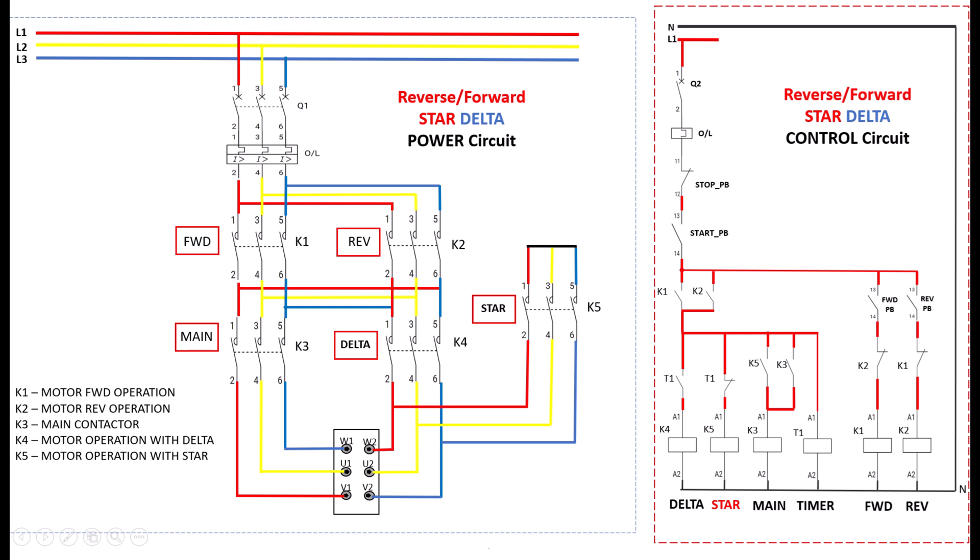The star delta starter is a widely used system in industries, primarily because of its ability to reduce starting current, which helps prevent high inrush currents that could otherwise damage the motor. It also provides directional control, enabling motors to operate in forward or reverse directions depending on application requirements. Additionally, the smooth transition from star to delta mode ensures efficient and safe operation, especially for heavy machinery, making it an essential component in industrial motor control systems. Now, let's talk about the core components.